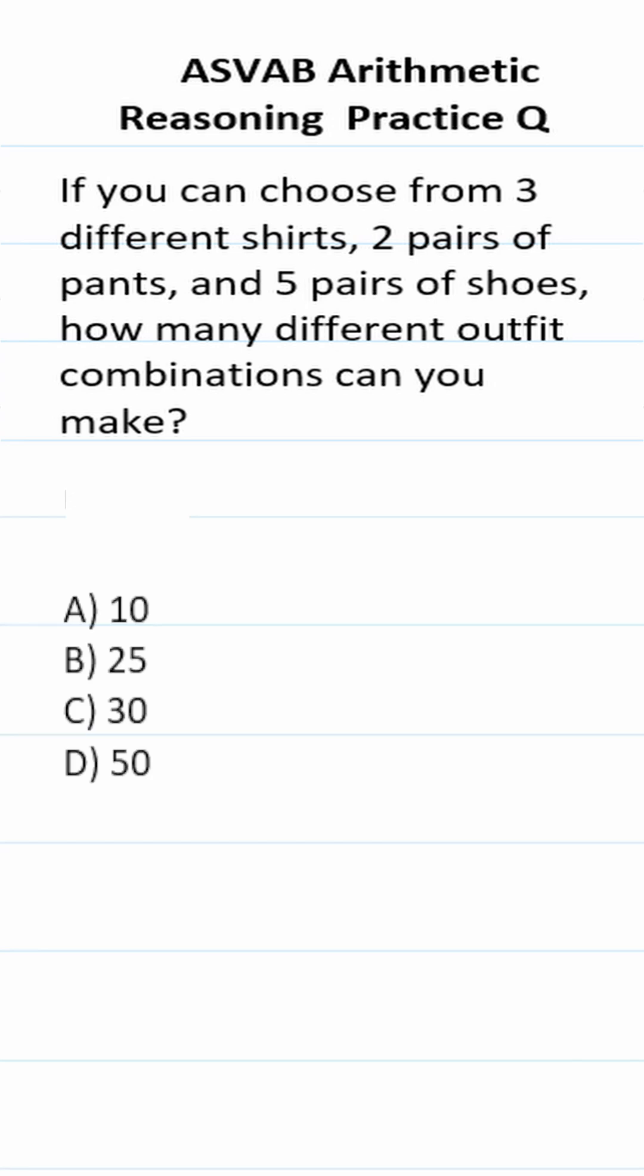This practice test question for the arithmetic reasoning subtest of the ASVAB and PICAT says this: If you can choose from three different shirts, two pairs of pants, and five pairs of shoes, how many different outfit combinations can you make?